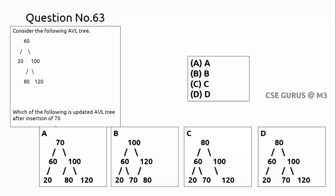We need to insert 70 into this AVL tree. Starting from the root, 70 is greater than 60 so it goes right; less than 100 so it goes left; less than 80 so it goes to the left of 80. Now checking balance at node 60: left height is one, right height is three — difference is two, so it is no longer balanced.